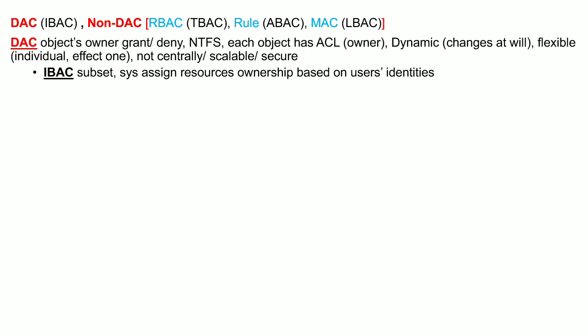Discretionary access control models are dynamic in nature — the owner of an object can change access or modify the ACL at will. These models are more flexible than non-discretionary access control because the individual controls access to the objects they have created, and therefore any change only affects that particular object and not the entire environment.